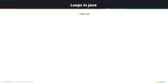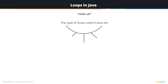Say you had to print 'hello' three times — you could do it by typing it three times. But what if you had to print a hundred times? What if you had to print a thousand times? The solution to this is the use of looping statements. There are three types of loops in Java: for loop, while loop, and do-while loop.